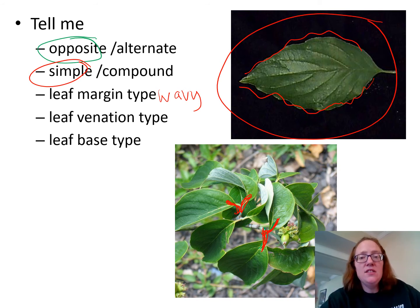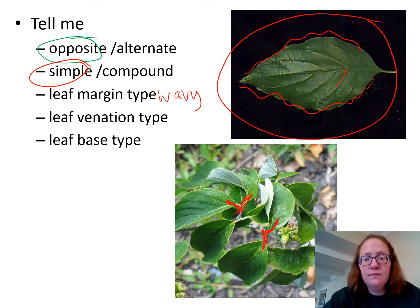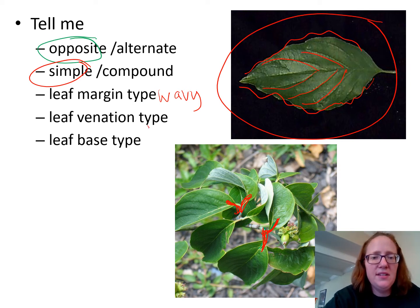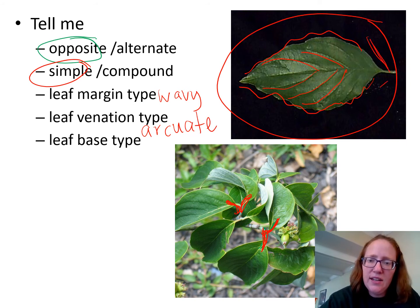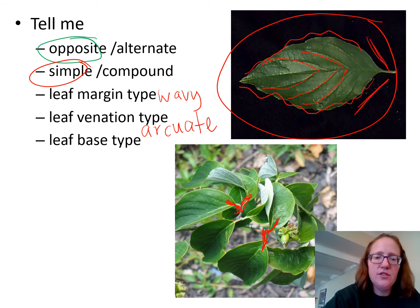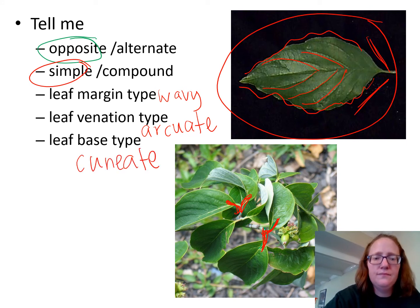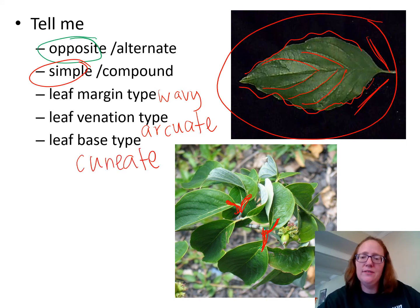For dogwood, the veins are definitely going up towards the tip of the leaf, so they are arcuate. And the base type is triangular — so that's cuneate. And there's dogwood.